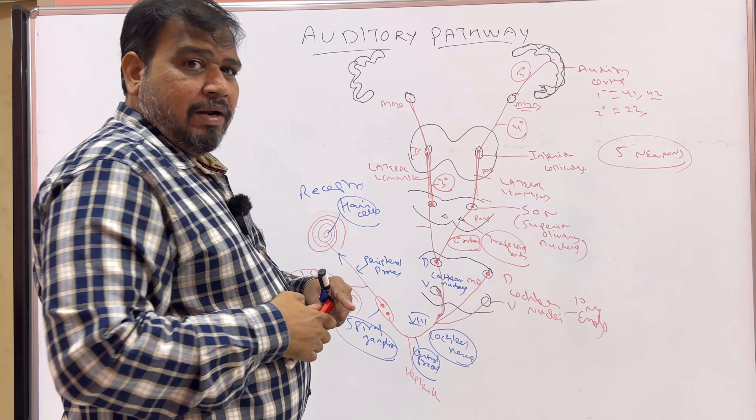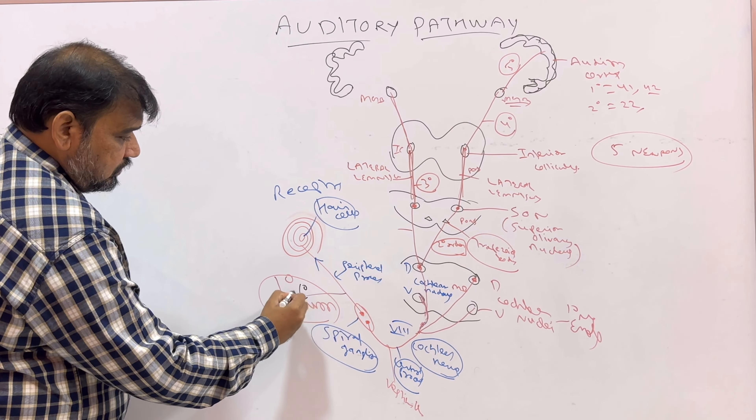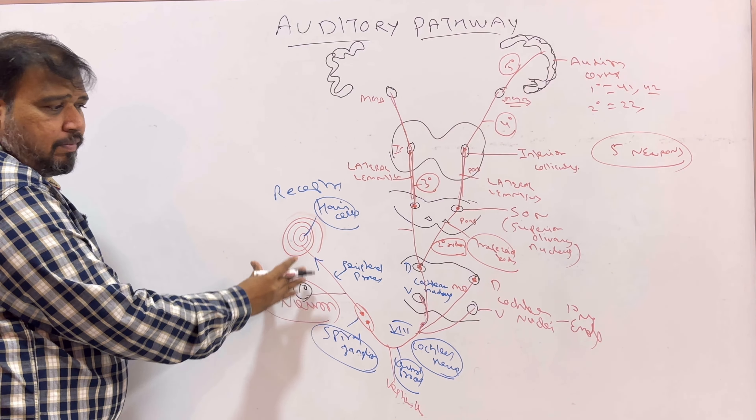In total there are five neurons. Let me write them here. First order neuron: from the hair cells to the dorsal and ventral cochlear nucleus. Second order neuron: from the cochlear nucleus to the superior olivary nucleus. Third order neuron: from the superior olivary nucleus to the inferior colliculus. Fourth order neuron: from the inferior colliculus to the medial geniculate body.